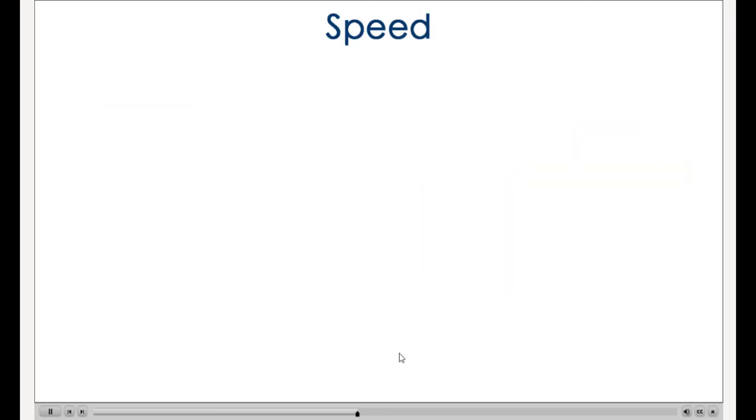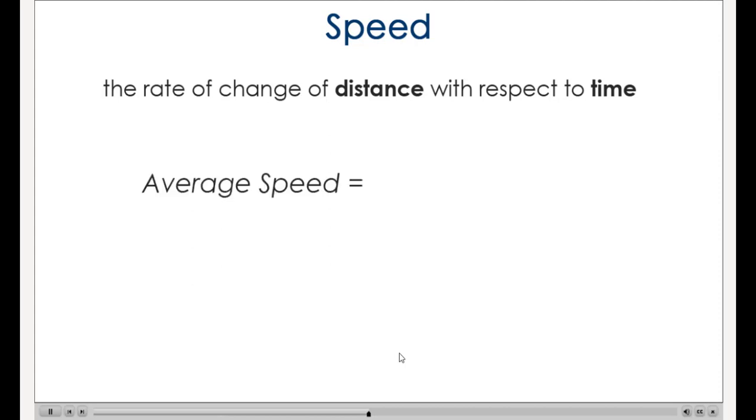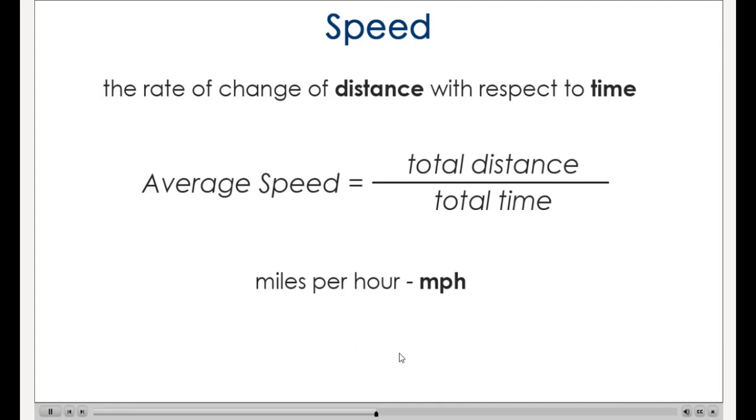Another way to describe motion is the speed at which an object is moving. Speed is the rate of change of distance with respect to time. If you know how far an object has traveled in a given amount of time, you can calculate speed by dividing the total distance by the total time it took to move that distance. Common units for speed are miles per hour or kilometers per hour, and feet per second.